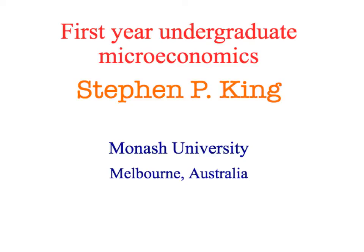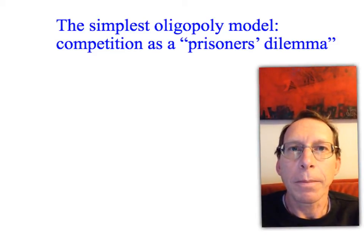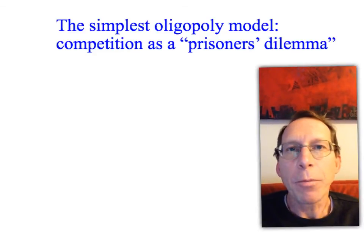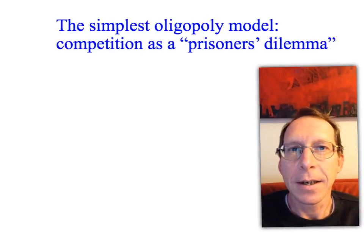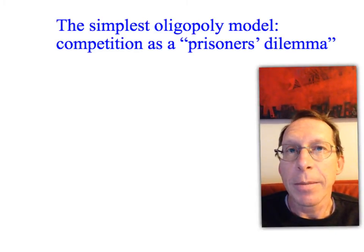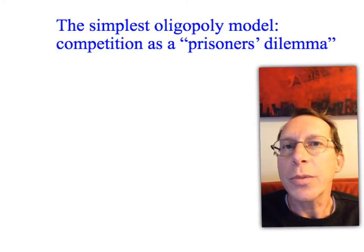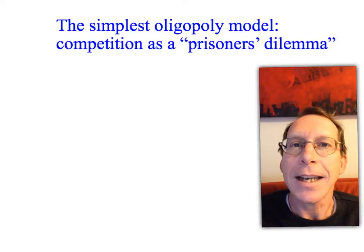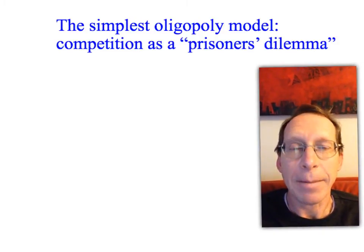Welcome back to First Year Undergraduate Microeconomics. So far in this course, we've concentrated on perfect competition and monopoly. These are models that don't require any strategic interaction between businesses. Perfectly competitive firms just take prices as given and choose how much to produce. The monopoly faces no competitors, so there is no strategy. As soon as we start considering small numbers of businesses interacting with each other, we need to consider strategy, and that means we need game theory.